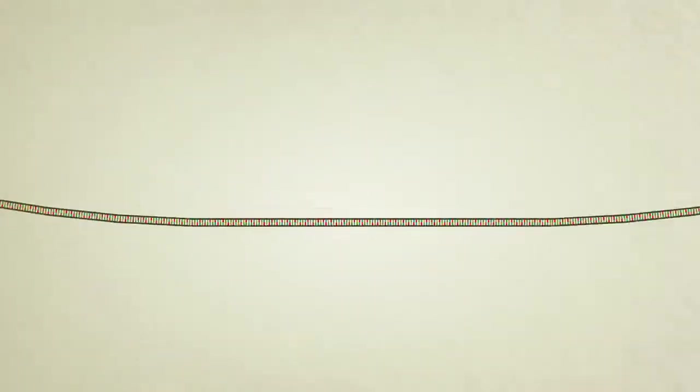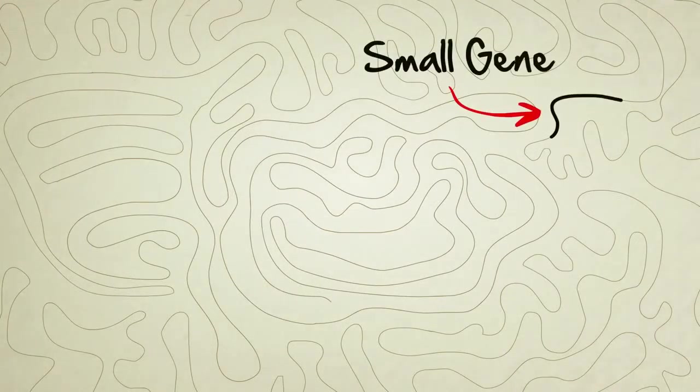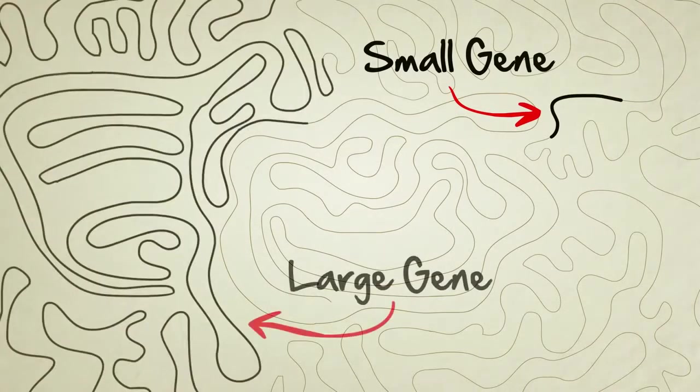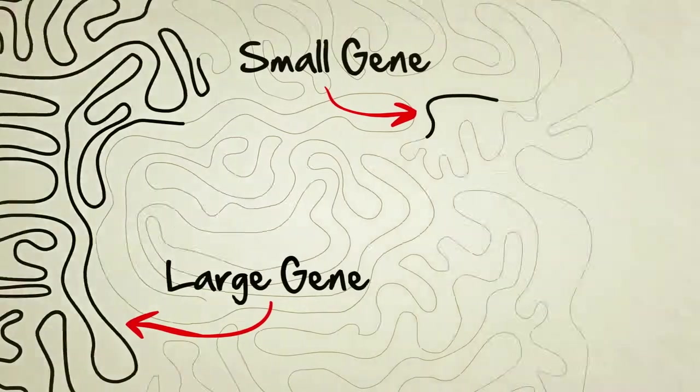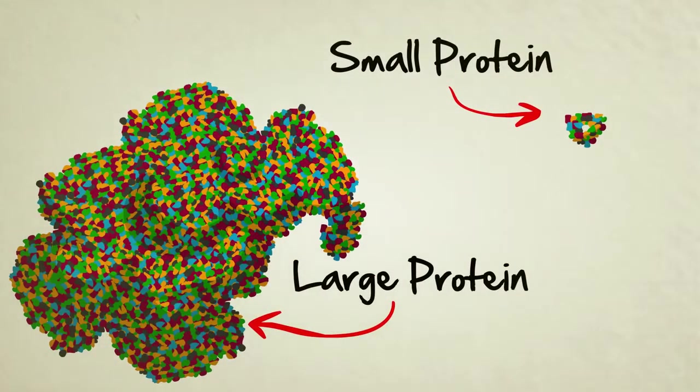Some genes are small, only about 300 letters long. Others are well over a million. The length and sequence of a gene determine the size and shape of the protein it builds. The size and shape of the protein determine the function that protein will have inside the body.